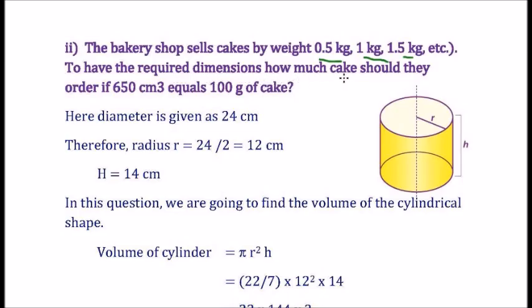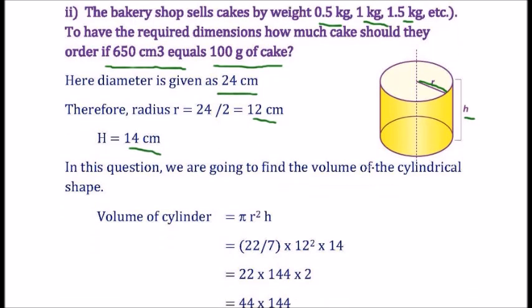To have the required dimensions, how much cake should be the order if 650 cm cube is equal to 100 gram of cake? Here, diameter is given 24 cm. Therefore, radius is equal to 24/2, that is equal to 12 cm. And height is also given, that is 14 cm.